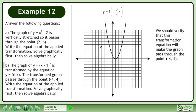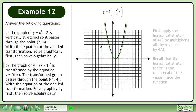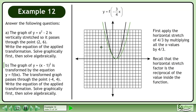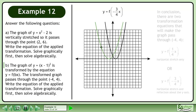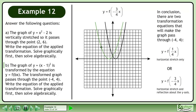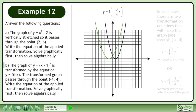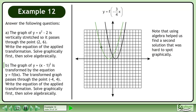We should verify that this transformation equation will make the graph pass through the point (negative 4, 4). First, apply the horizontal stretch of 4 over 3 by multiplying all the x-values by 4 over 3. Recall that the horizontal stretch factor is the reciprocal of the value inside the function. Next, reflect the graph about the y-axis. The transformed graph passes through the point. In conclusion, there are two transformation equations that will make the graph pass through the point: y equals f(x/4), and y equals f(negative 3x/4). Note that using algebra helped us find a second solution that was hard to spot graphically.